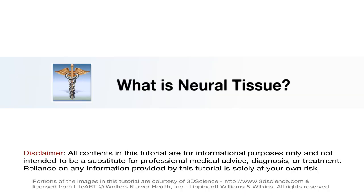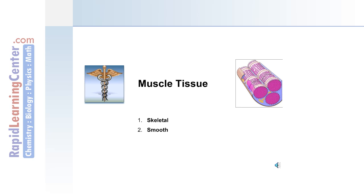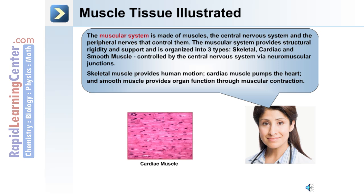We'll now discuss muscle tissue including the three different types: skeletal, smooth, and cardiac muscle. The muscular system is made of the muscles, the central nervous system, and the peripheral nerves that control them. It provides structural rigidity and support, and is organized into skeletal, cardiac, and smooth muscle, which is controlled by the central nervous system via neuromuscular junctions.